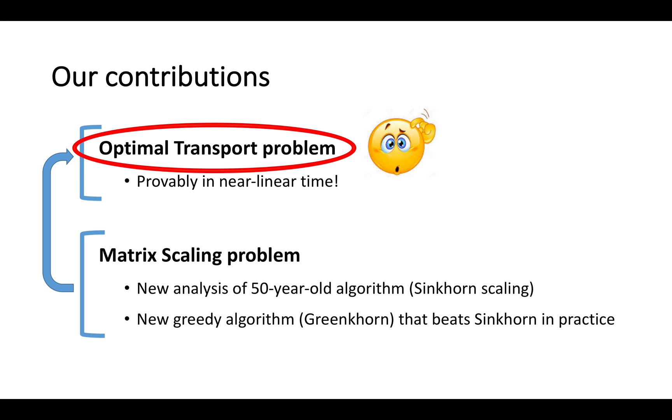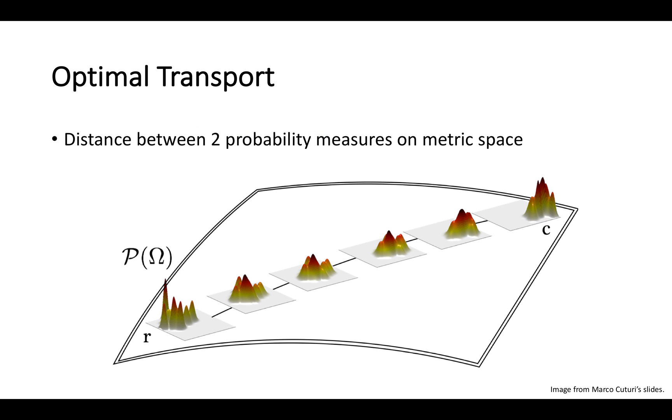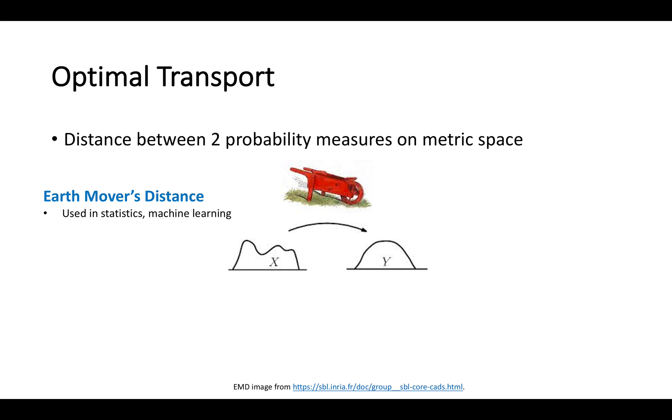I'll now introduce the problem of optimal transport. This is the problem of moving mass from one probability distribution to another, in the cheapest way possible with respect to the underlying metric. A famous special case is the earthmover's distance, which computes distances between histograms.